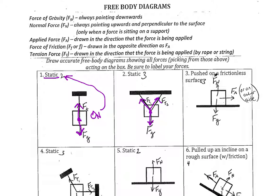If an object is pushed on a frictionless surface, we're going to have some sort of applied force. But first, realize right away — automatically, you don't even have to think about it — gravity is pulling this object down. If the object is not accelerating through the floor, it must be resisted by something: the normal force. It's also being pushed on a frictionless surface, so there's some sort of applied force in either direction — we don't really know the direction. Normally we would have the force of friction acting backwards, but in this case we won't because it's a frictionless surface.